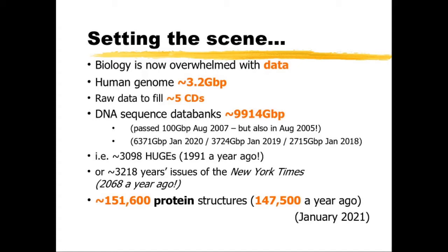Let's set the scene with a bit of background about data. Biology is now overwhelmed with data. Traditionally it was quite a data-poor subject — people drew pictures of animals or plants and collated simple information — but now with sequencing methods, structural methods, and omics methods, there are just huge amounts of data. The human genome itself is about 3.2 gigabase pairs in size — 3.2 billion base pairs of DNA — and that's enough raw data to fill about 5 CD-ROMs or 1 DVD, and that information is being carried around in every cell of your body.